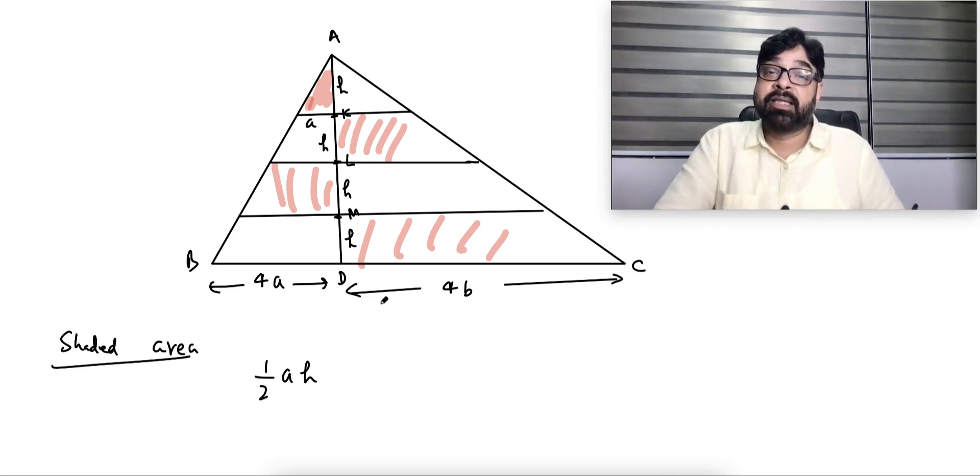Plus this area. Think what will be this area? This height is h. Now I want to know this length. This length is b. This total is 2h and this is similar to this triangle, so this is 2b. So this is a trapezium. Trapezium area is half sum of parallel sides: b plus 2b equals 3b into distance h.